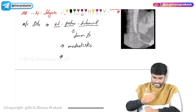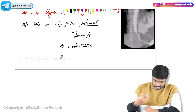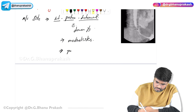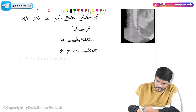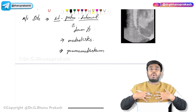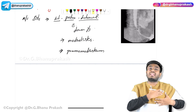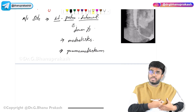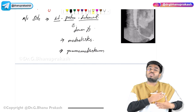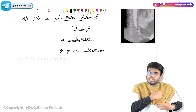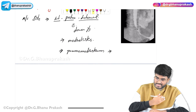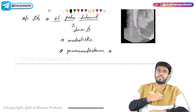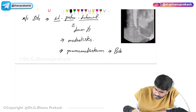Air entering the esophagus now has access to the mediastinum, causing pneumomediastinum. All this air will pass through the muscle layers and come under the skin, forming air pockets — causing a crackling sound upon palpation, which is called subcutaneous emphysema.